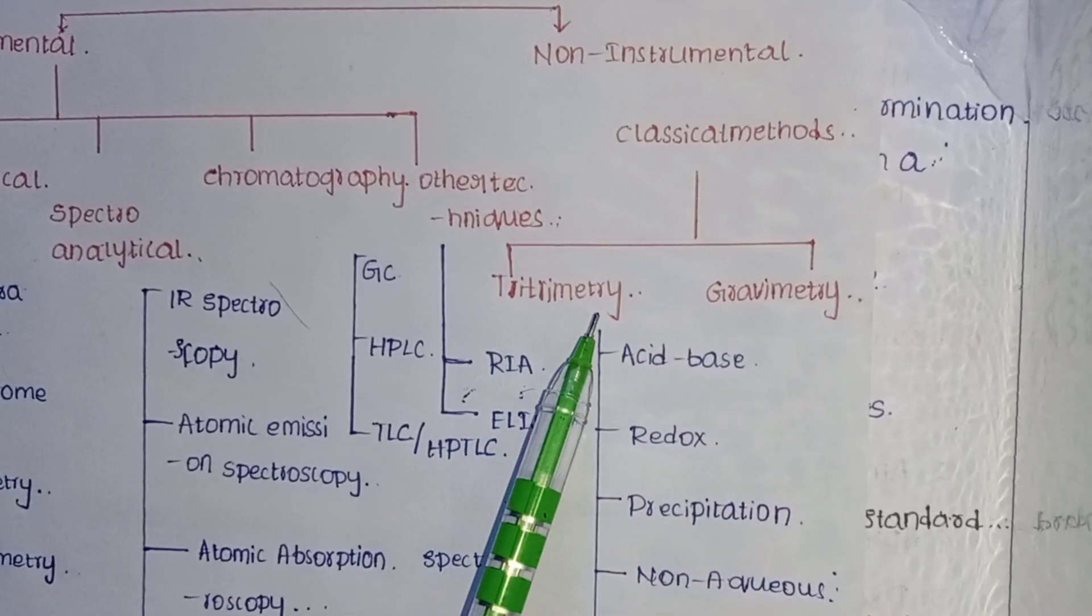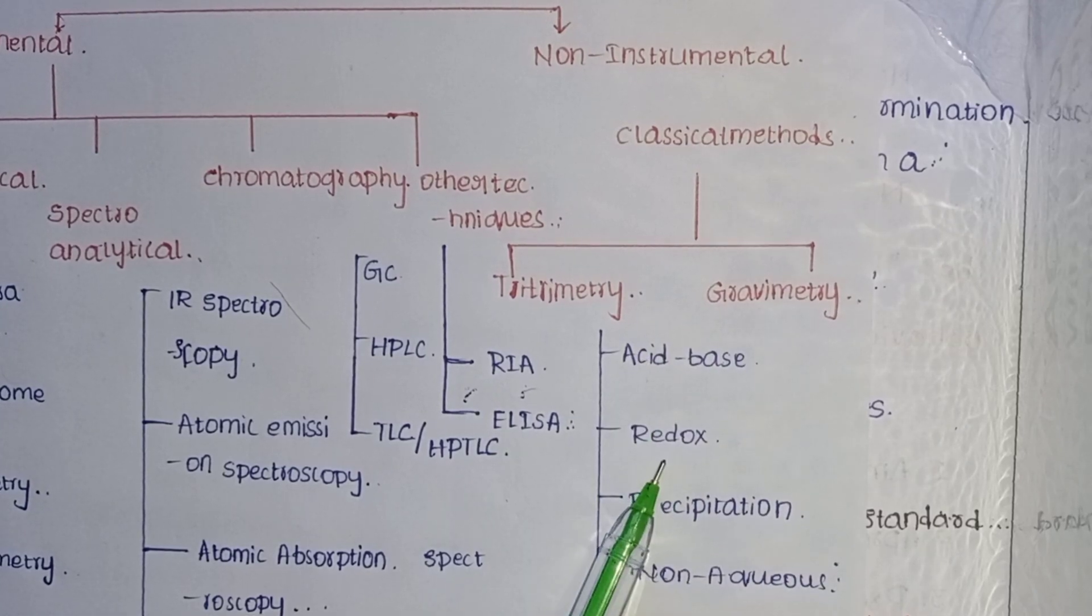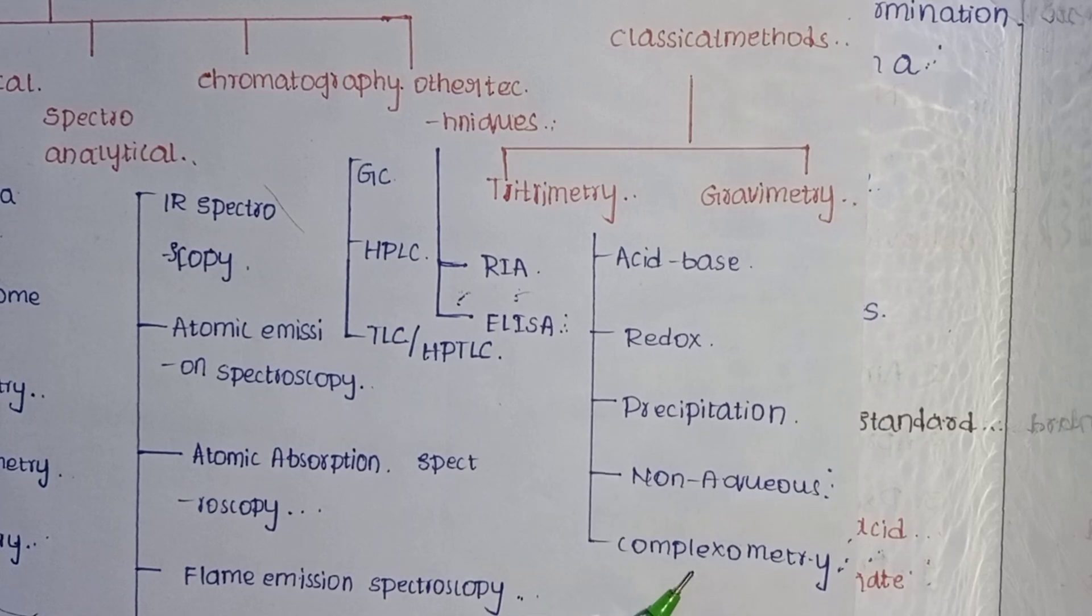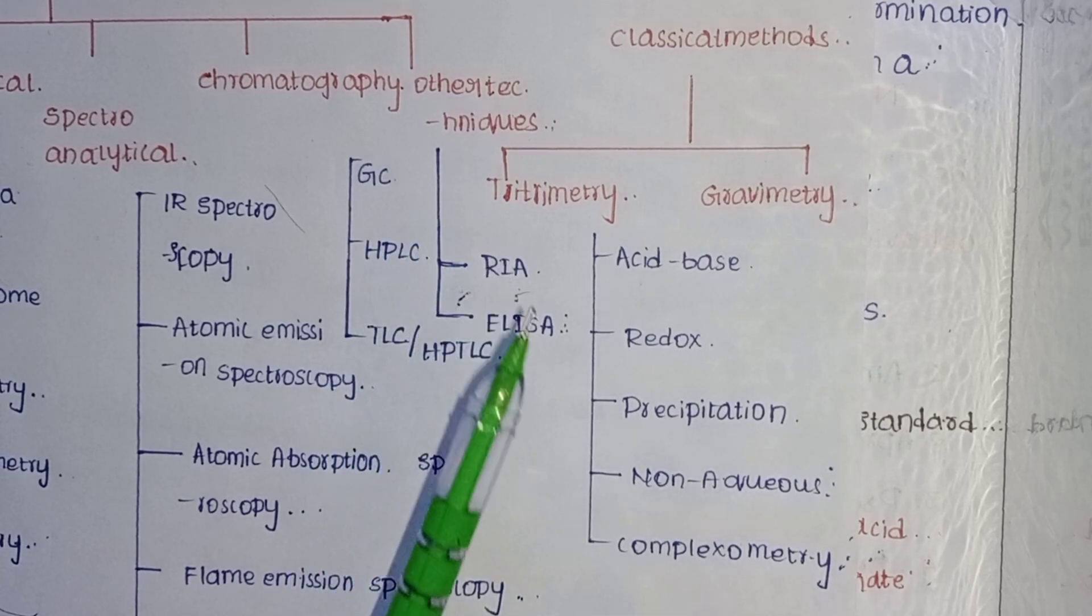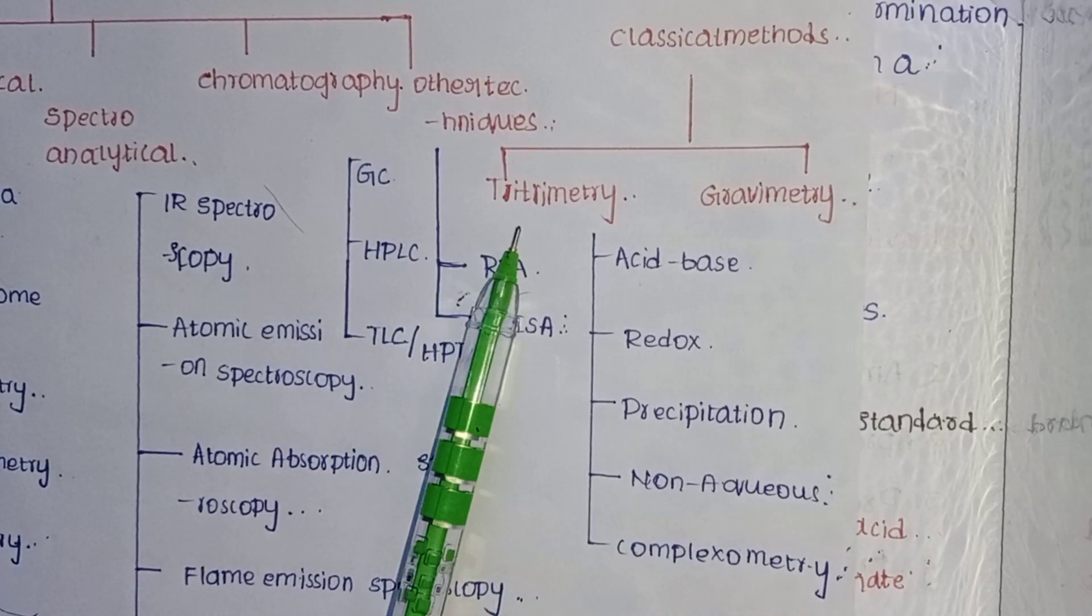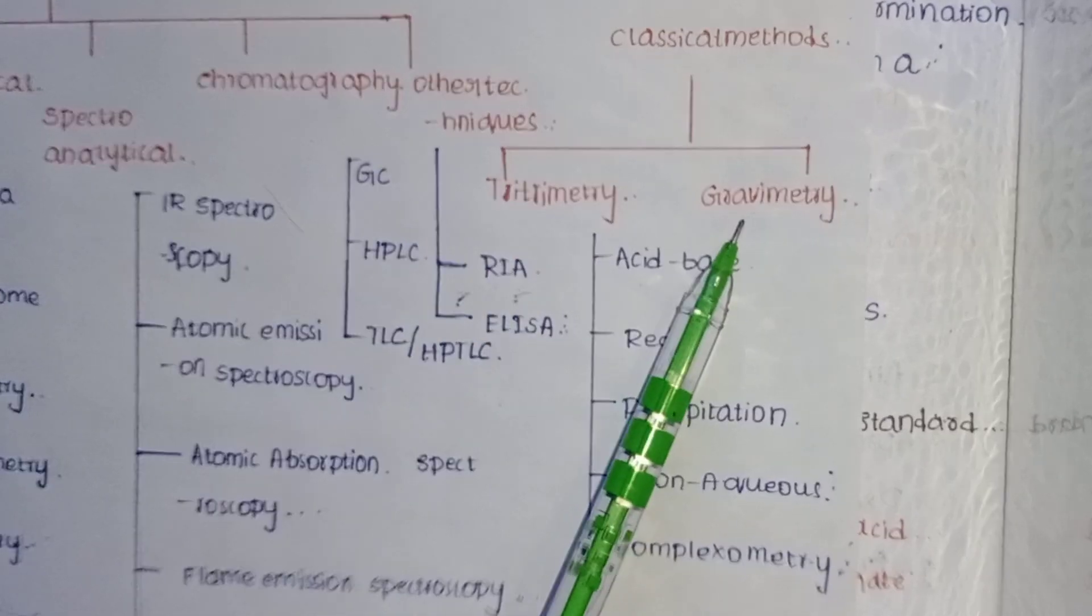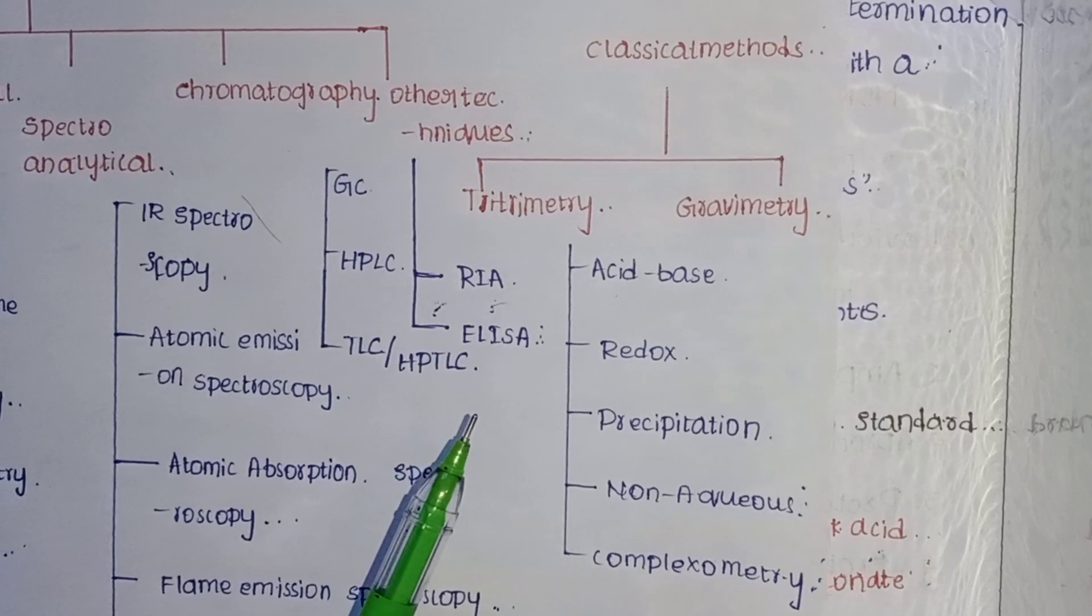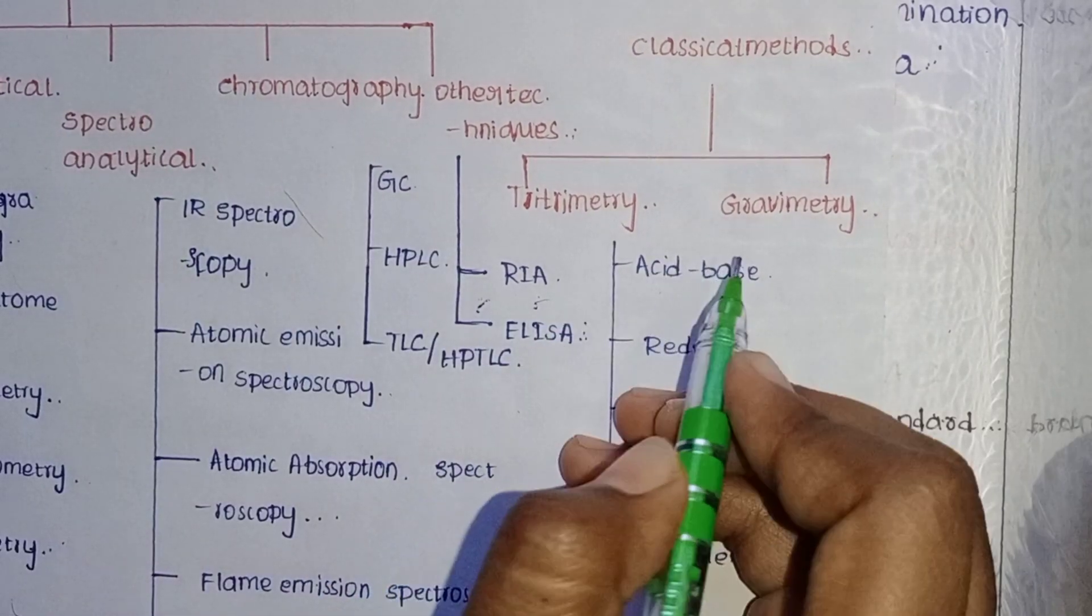Titrimetry includes acid-base, redox, precipitation, non-aqueous, and complexometric titrations - five types of titrations that take place in the titrimetry process. Next, gravimetry means to find the mass of the analyte.